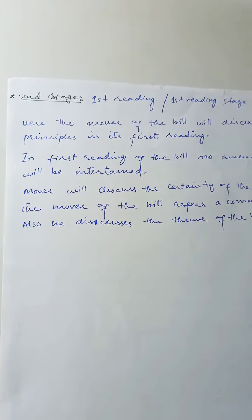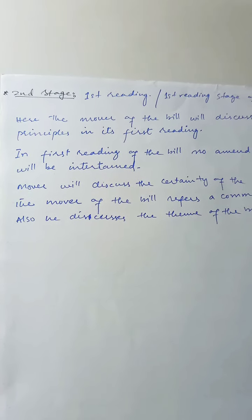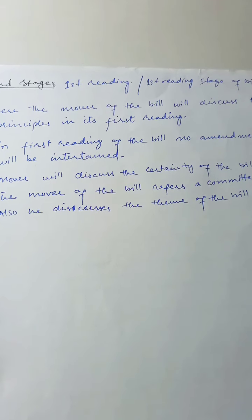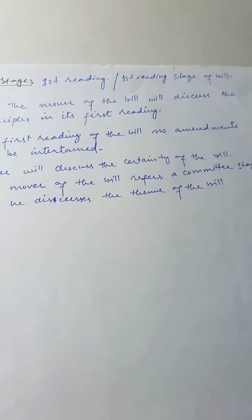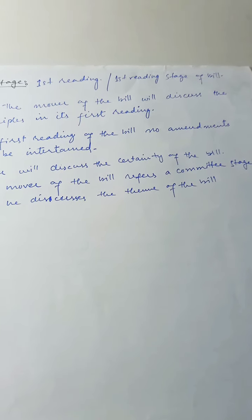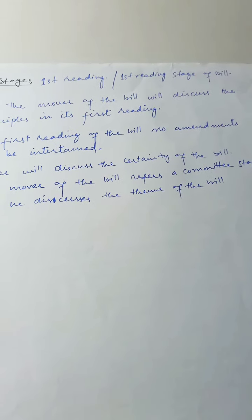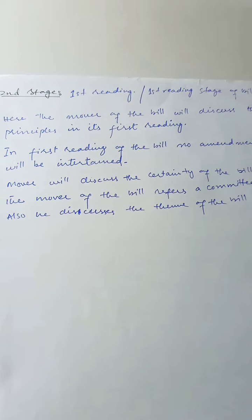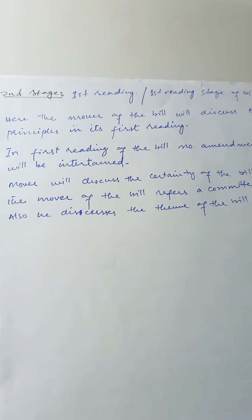So to recap: in the first stage the bill was introduced; in the second stage we move to the first reading where the mover discusses principles, no amendments are entertained, certainty is discussed, the bill is referred to the committee stage for further reading, and the theme or central idea of the bill is also discussed. Today we covered the second stage. In our next video, inshallah, we will study the third stage. Till then, take care. Allah Hafiz.